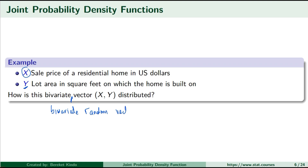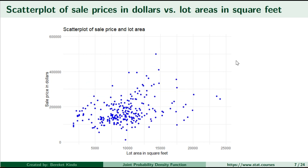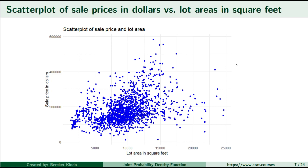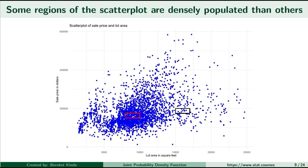You may hypothesize that larger lot area may warrant a higher sale price, and that smaller lot areas could have smaller, less expensive homes with lower sale prices. As a good statistician or data-based decision maker, you collect data to understand the joint dynamics of sale price and lot area. By creating a scatter plot of sale prices in dollars versus lot area in square feet, we can visually see that there is some positive correlation between the two random variables. You also notice that some regions on the scatter plot are more sparsely populated compared to others.